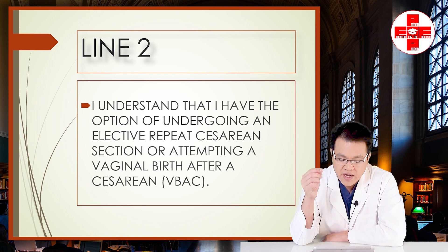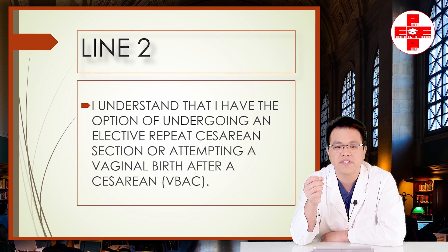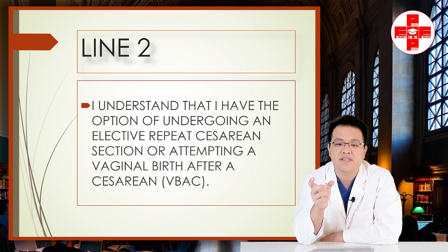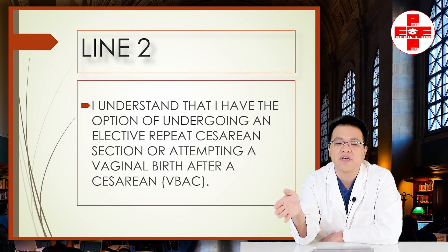Line two: 'I understand that I have the option of undergoing an elective repeat cesarean section or attempting a vaginal birth after a C-section.' ACOG's stance is that patients get to choose between a scheduled repeat C-section or a VBAC via a trial of labor after C-section.